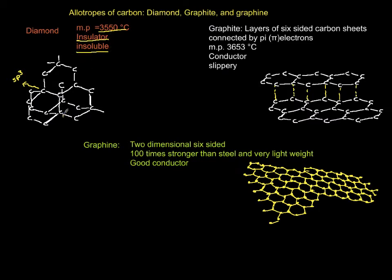Graphite, which you have in your pencil leads, consists of layers—sheets of six-sided carbons. They have pi electrons holding the layers together; therefore, they can slip on each other and can be used as a lubricant. That's why your pencil leaves a trace on paper—you actually discard one layer as you're writing.